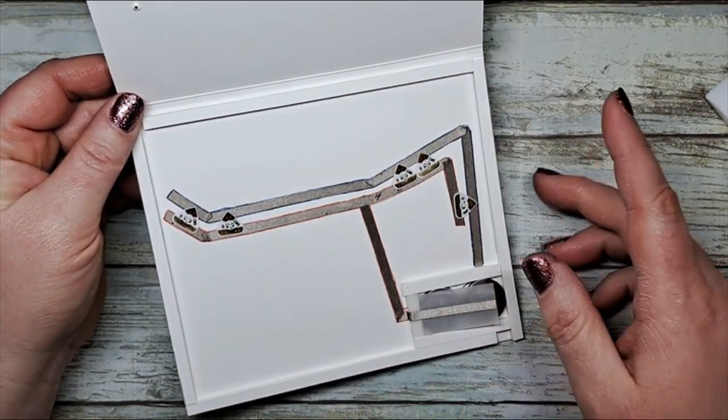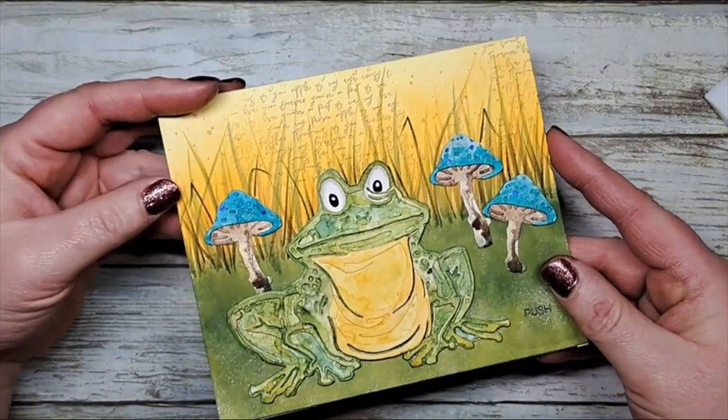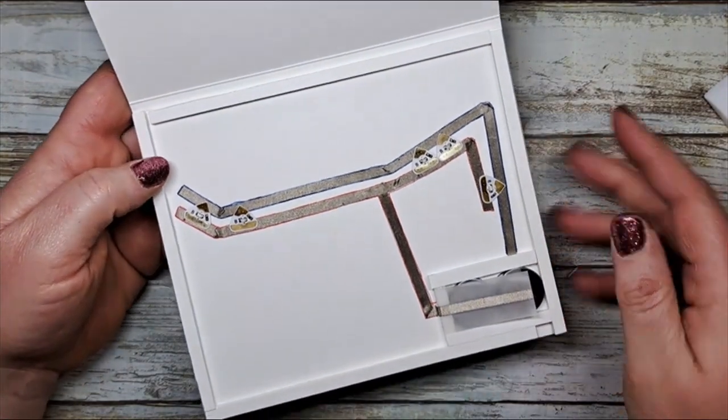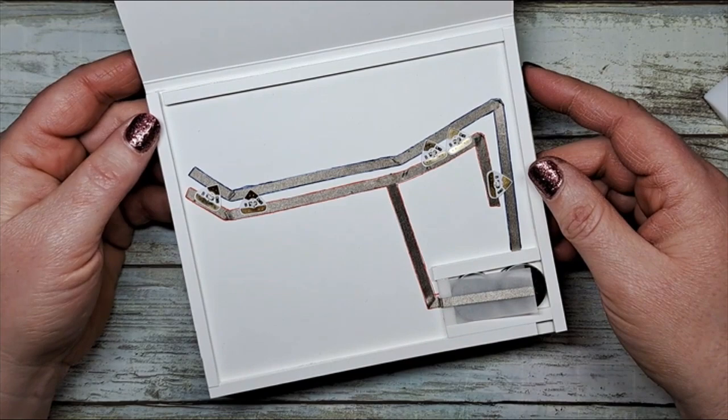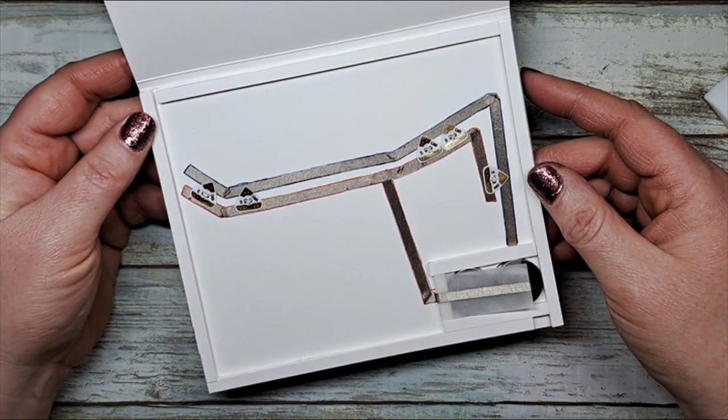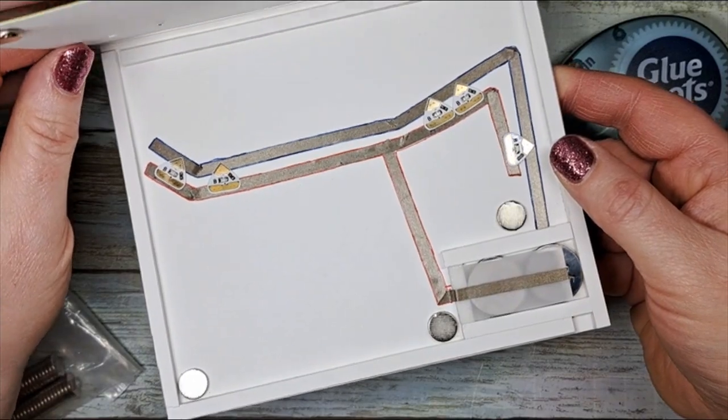So therefore all of my foam tape actually is paper topped so it doesn't stick to my lid. But I do add fasteners in the corners. Either mini magnets or even tiny little velcro dots work perfectly too.